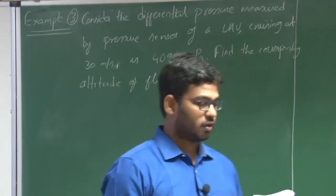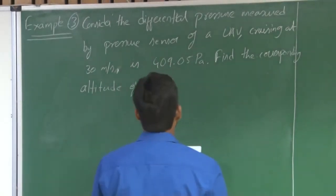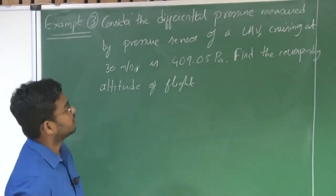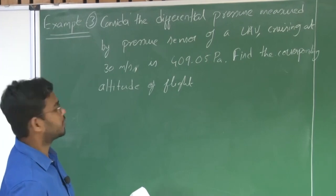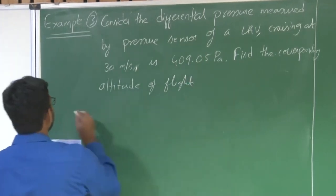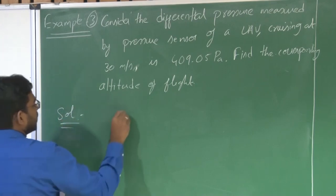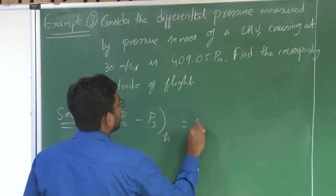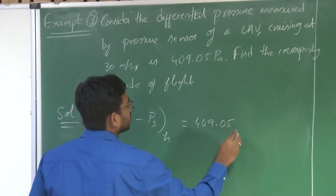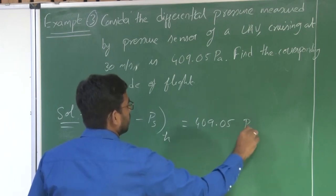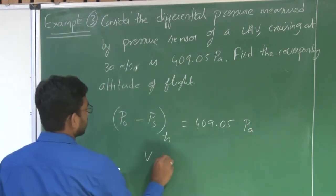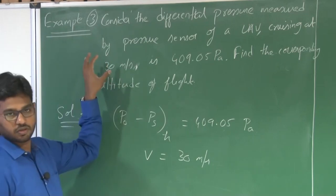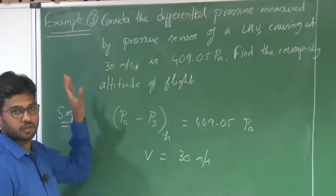Let us revisit example number 3. Consider the differential pressure measured by the pressure sensor of a UAV cruising at 30 meters per second is 0.4 kilopascals. Find the corresponding altitude of flight. What we have is P_0 minus P_s at a particular altitude equals 409.05 pascals, and the corresponding velocity of flight is 30 meters per second, known from some other instruments.